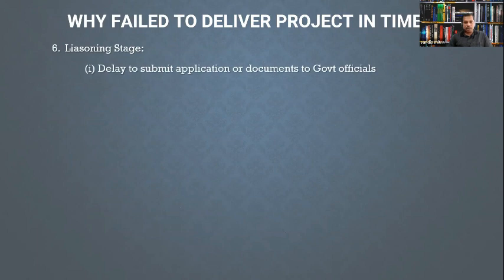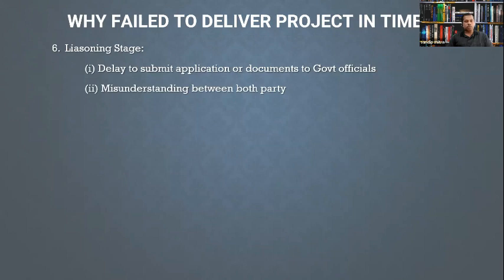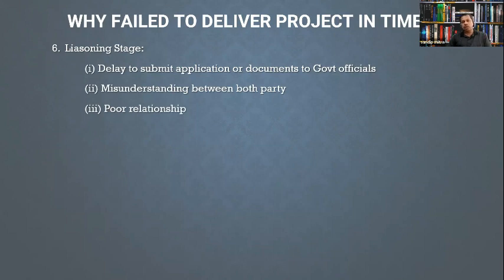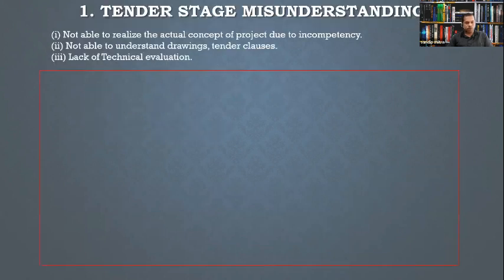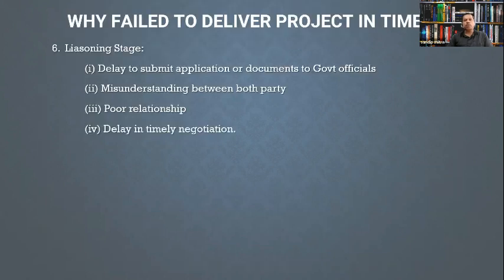In the licensing stage, whoever is dealing with government officials needs to handle the submission of applications and documents properly. Misunderstanding between both parties and a poor relationship with government officials can cause delays. The licensing team must maintain a good relationship with government officials, and delay in timely negotiation is a key reason why projects are not completed on time.